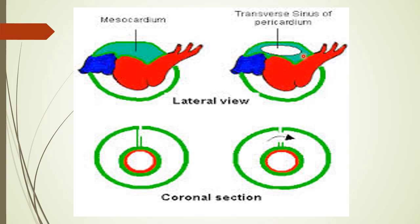From the caudal part of the dorsal mesocardium, the proepicardial organ will be formed, and another mass of mesenchymal cells derived from the dorsal mesocardium will form the DMP, or dorsal mesenchymal protrusion.